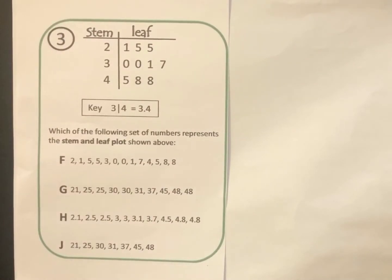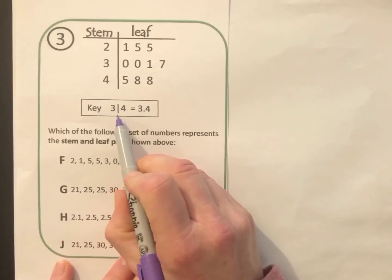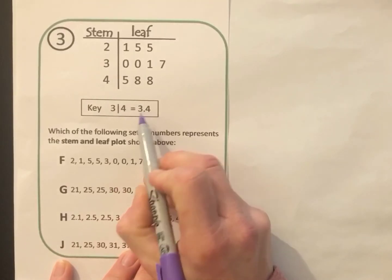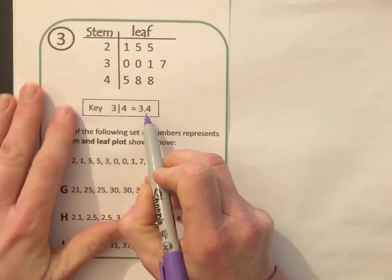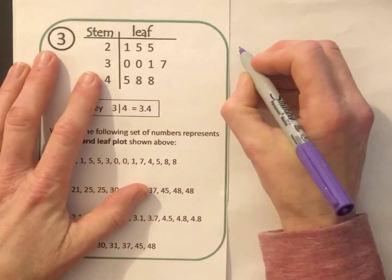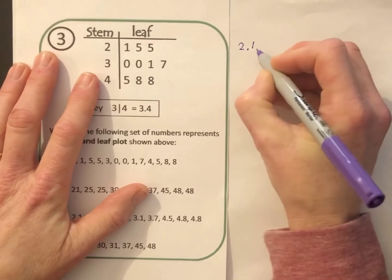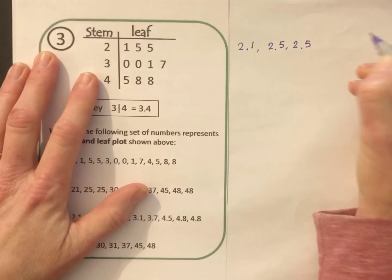Number 3 is a little different, and you'll see why in the key. Let's look carefully at the numbers. I'll go over those with you, and then I'll let you pick the answer yourself. If you look at the key, look carefully. 3 line 4 doesn't stand for 34 this time. It stands for 3.4, 3 and 4 tenths. This is a decimal this time. So when we go back to interpret the numbers in the stem and leaf plot, we need to think of them as decimals rather than tens. So the first row with a stem of 2 and leaves of 1, 5, and 5, that's not 21, 25, and 25. Instead, it's 2.1, 2.5, and 2.5.